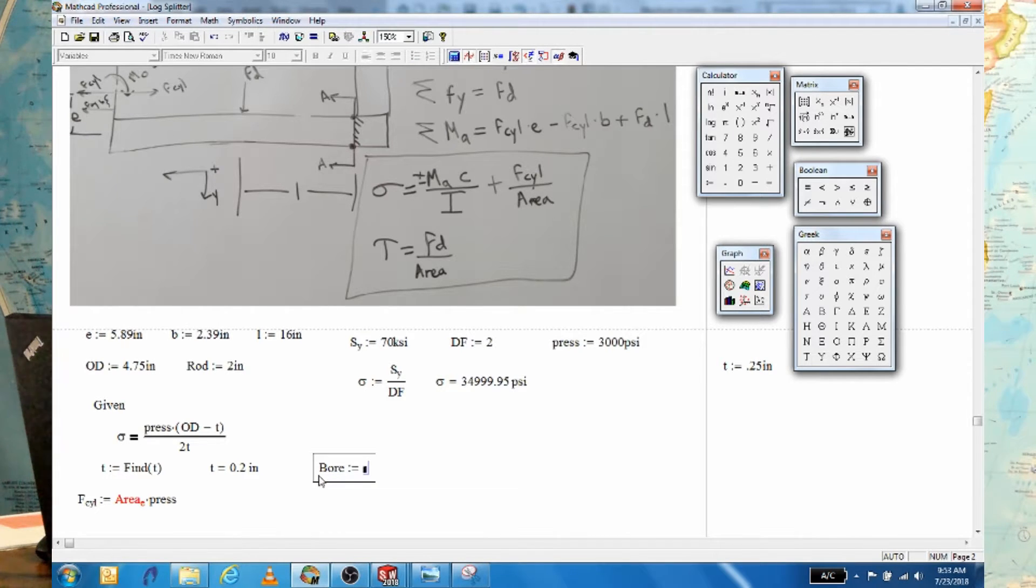Let's calculate our bore size from that. So that's going to be OD minus two thicknesses. Because it's one on each side. And our bore then would equal 4.36. Now, that is not a common size of a tube. So it's also not common to have a design factor of only two. You probably want a design factor of three. Maybe even four. So any one of those gives you, here let's just stay with four. It gives me a bore of four.